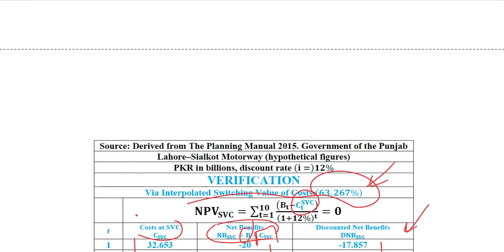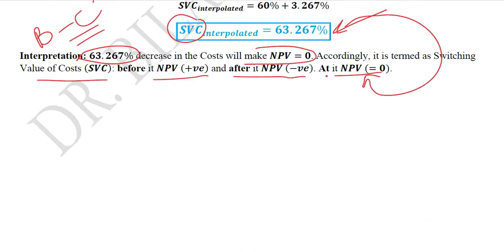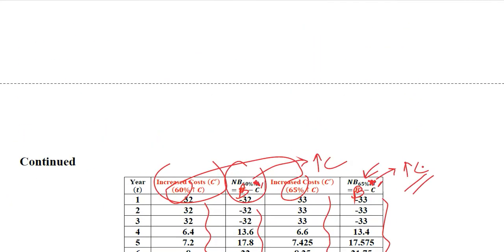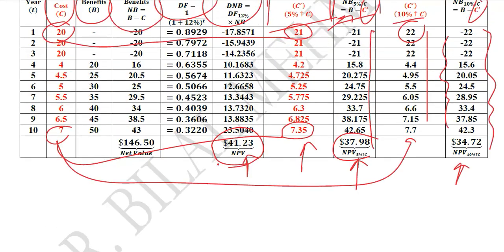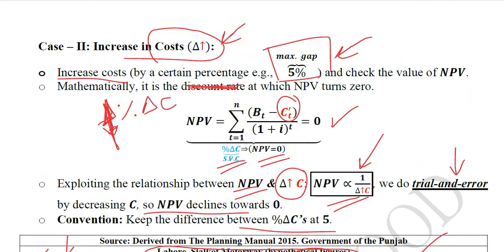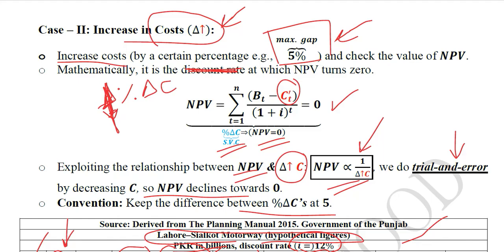In this way we have conducted sensitivity analysis for the case of unexpected increase in cost, which was the second case of the sensitivity analysis. In the next video we will conduct sensitivity analysis by changing the critical factor of the discounting rate. Thank you.